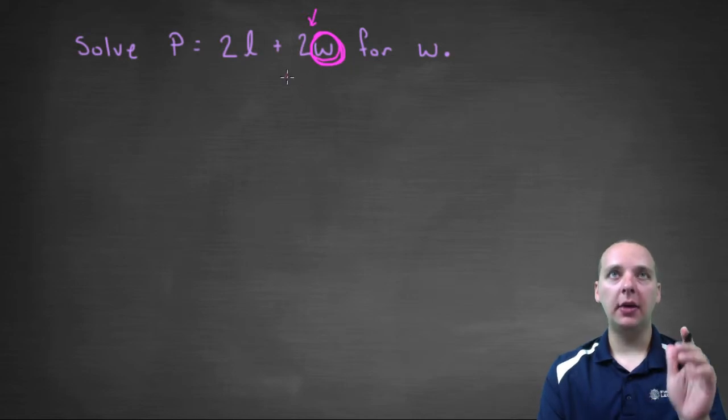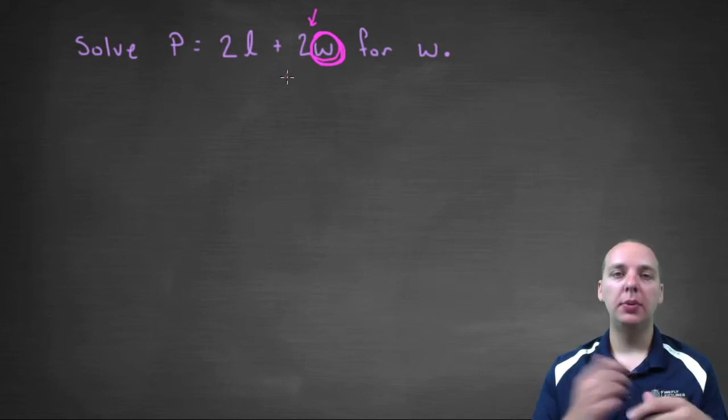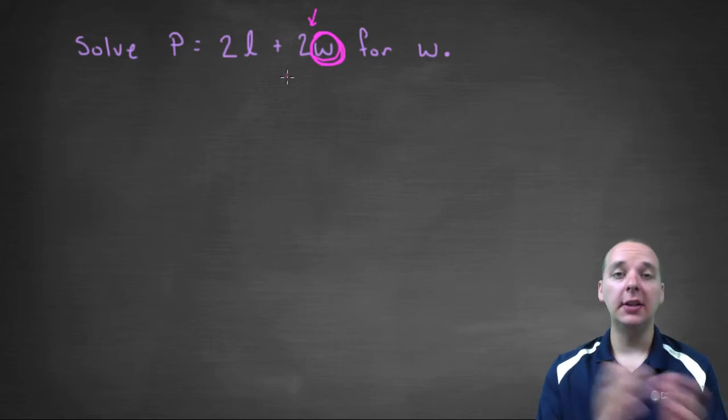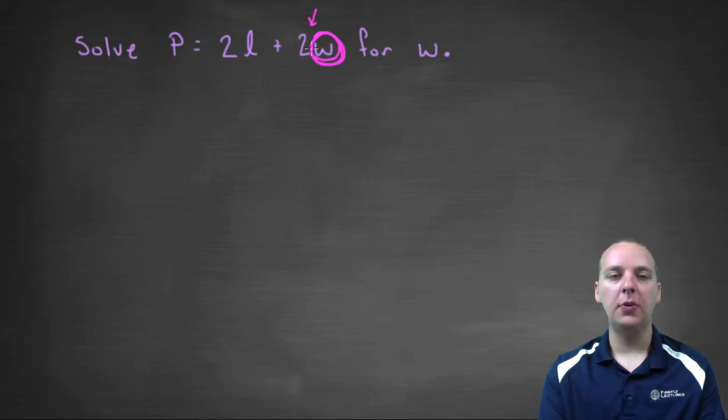Now you have to keep in mind order of operations - PEMDAS: parenthesis, exponents, multiplication, division, then addition, then subtraction. To solve for W, the first thing you'd have to do is subtract away that 2L. We can't divide by this two first because of the 2L that's being added. But we can subtract away the 2L first.